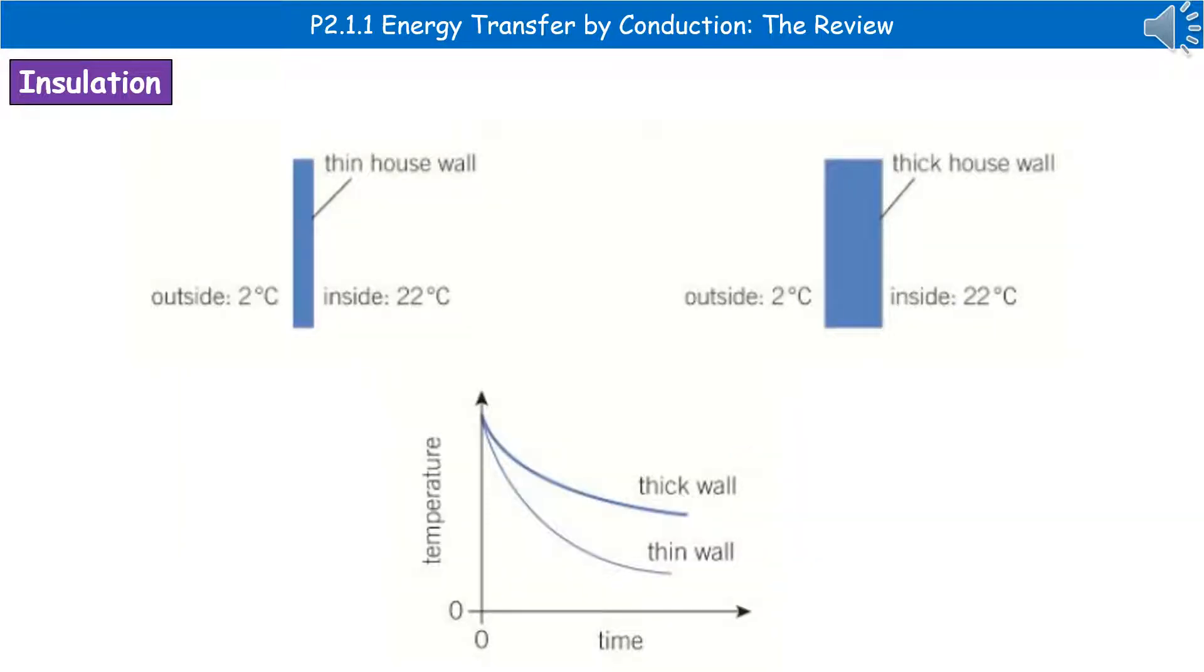In this example, we can see the difference between thin and thick walls. The graph at the bottom shows that the thick wall has a much more gradual decrease in temperature than the thin wall, where it's more rapid. This shows us that the thicker the wall is, the more gradual the transfer of energy from inside to outside will be.